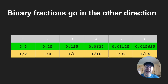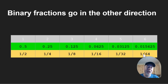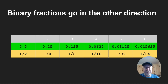Binary fractions go in the other direction after the decimal point. You still have positions one, two, three, and so on, but rather than doubling — 1, 2, 4, 8 — now it halves: a half, a quarter, an eighth, a sixteenth, a 32nd, a 64th, and so on. Going away from the decimal point, every bit — one or zero — defines part of a fraction, halving itself each time as it goes through each position.